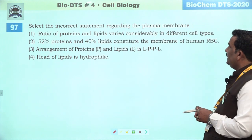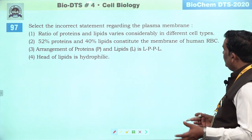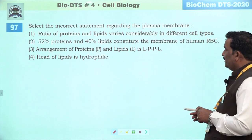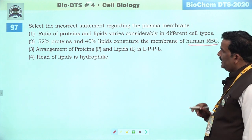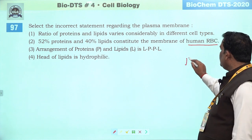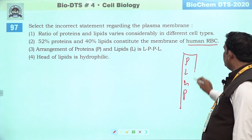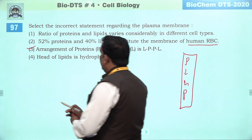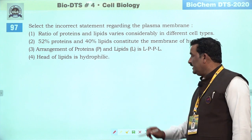Next question: select the incorrect statement regarding the plasma membrane. Ratio of protein to lipid — variable ho sakta hai. 52% protein or 40% lipid — yeh human RBC ki membrane mein hota hai — bilkul sahi hai. Arrangement par jab baat ki jaaye — protein, lipid, lipid and protein hota hai. Isliye jo wrong bana hai woh third hai. Head of the lipid is hydrophilic — bilkul sahi hai. Third is the right answer.